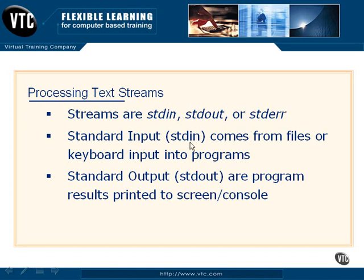Our standard input, or stdin, is going to come from putting in values to programs. So if we want to, for example, ping several different machines at the same time, we can actually force — through a little bit of work with the text stream — a list from a text file into the ping command and have it cycle through each. The results of that process will produce a standard output, where the program gives us feedback to the screen about whatever it is that we are doing.